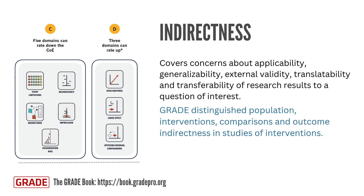A special type of indirectness results when two or more options are not directly compared within studies. The primary method for assessing indirectness involves comparing studies with more and less indirectness using statistical or graphical tools. However, there are scenarios where it may be necessary to rate down certainty even when subgroup analyses do not show apparent differences — for example, when there are concerns about the baseline risk estimate.